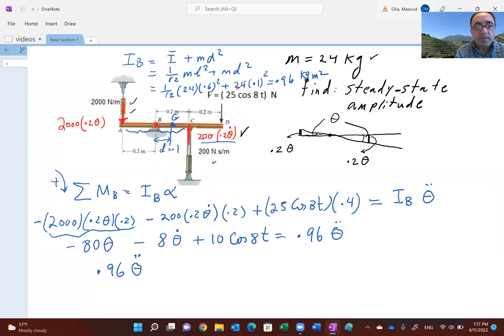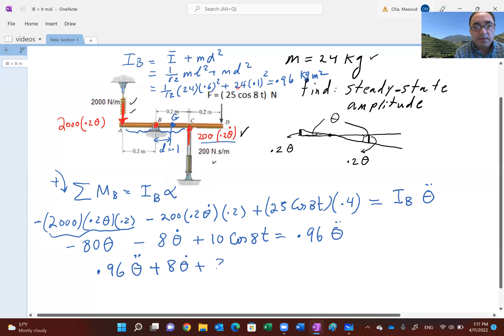We'll clean this up one more time by bringing all the terms with theta double dot, theta dot, and theta to one side of the equation. We'll have positive 8 theta dot and 80 theta, and the force remains on the other side.